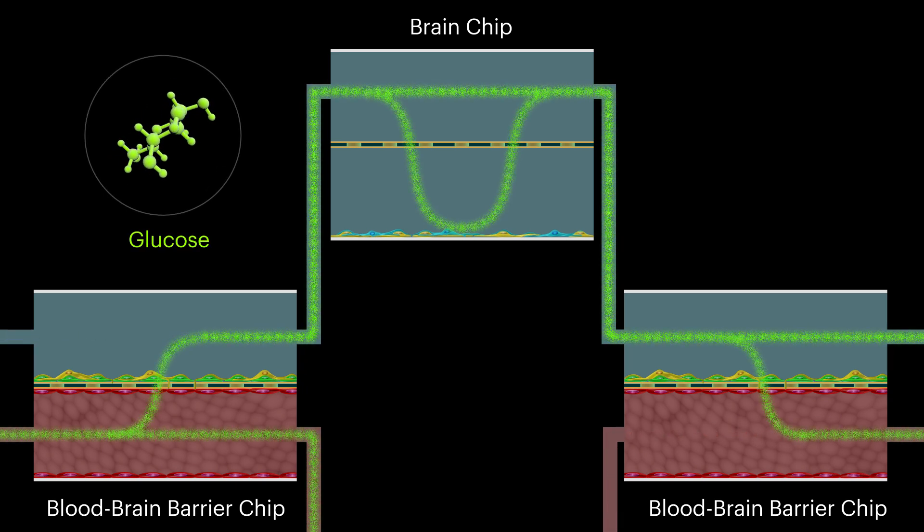Just like in a living brain, small molecules such as glucose flow into the system through the vascular channel and pass into the perivascular channel, which leads them to the neurons in the brain chip.